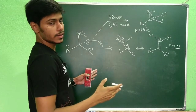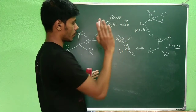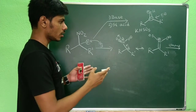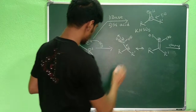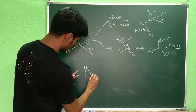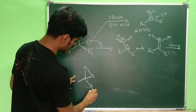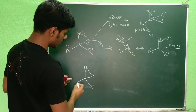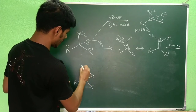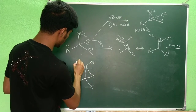Oxone is KHSO5, the potassium salt of peroxomonosulfuric acid. When you treat the nitronate with oxone, you form an epoxide-like intermediate — the nitrogen counterpart of an epoxide — with an OH and an O-minus on the nitrogen.